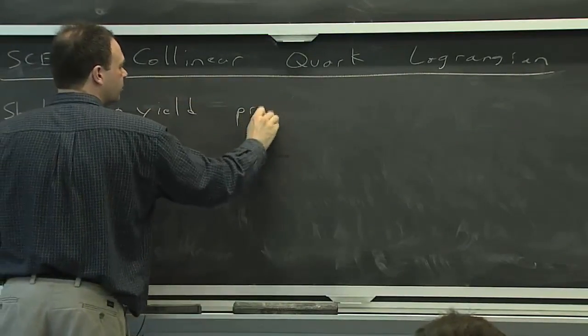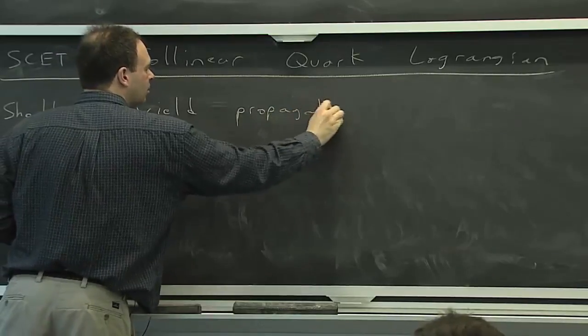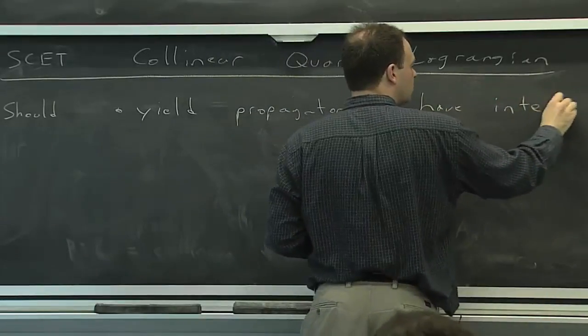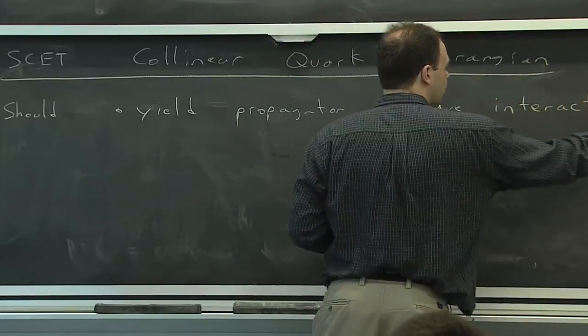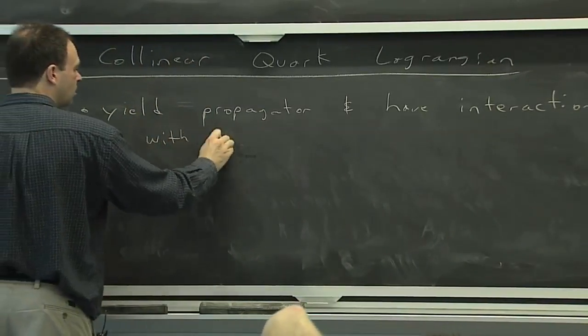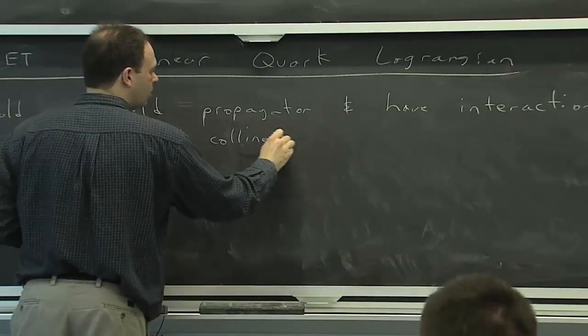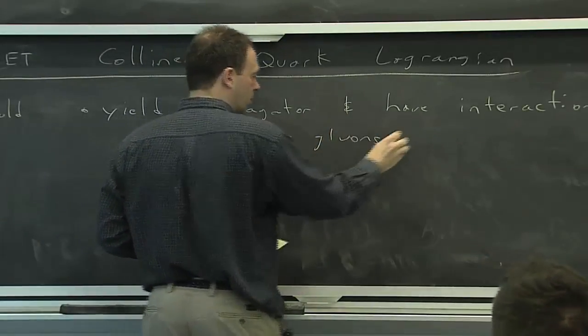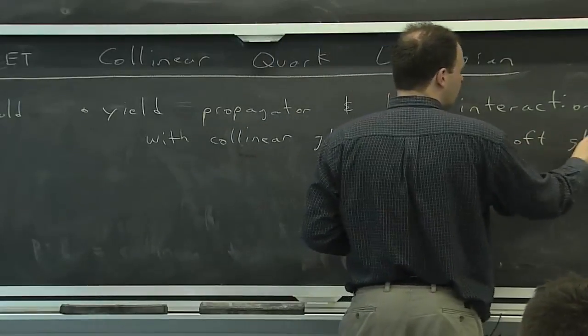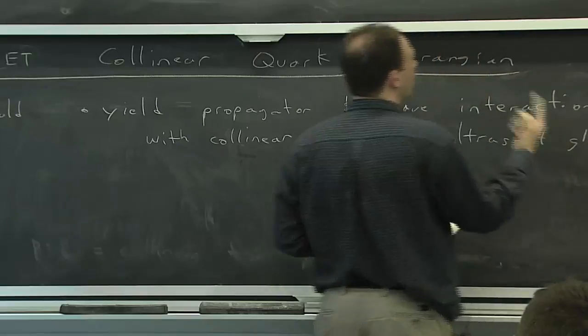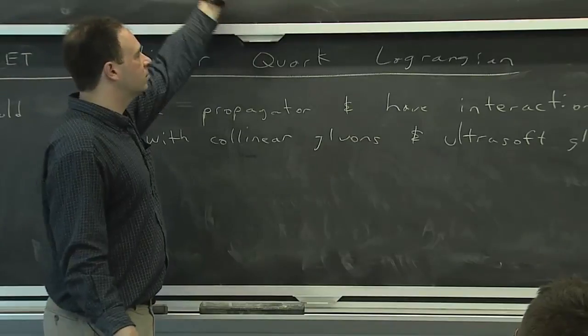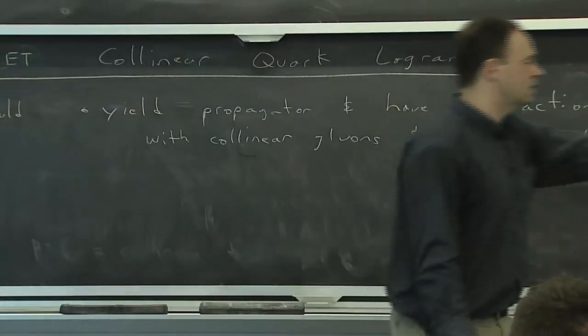It should yield the propagator, of course, and also interactions. And it has interactions both within this effective theory. It has interactions both with collinear gluons from that diagram over there, and with ultra soft gluons. And you can see, even from here, why we need two different fields, because there has to be some way of telling that we have a different propagator in this case than in that case.